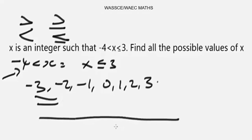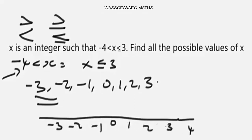To represent this on a number line, we mark the midpoint, then place -3, -2, -1 on the left and 1, 2, 3 on the right, stopping at 4. We put -4 here as well to show the full range of the inequality.